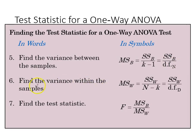Then we'll also find the variance within the sample, MSW, as SSW over n minus k, and that's the degrees of freedom in the denominator.